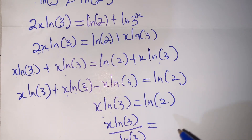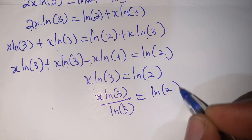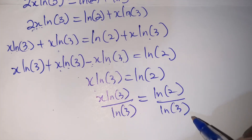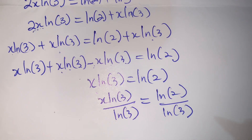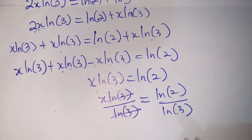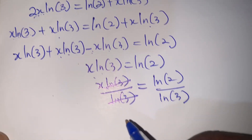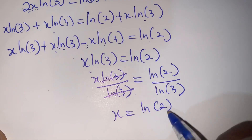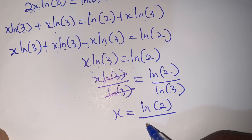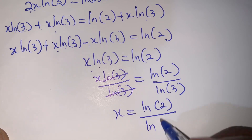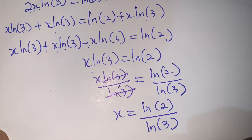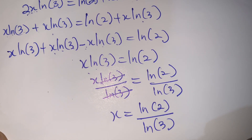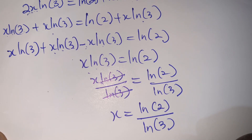This cancels, and I have x equal to ln 2 divided by ln 3. This is the value of x. Kindly subscribe to my channel, share, and like the video.